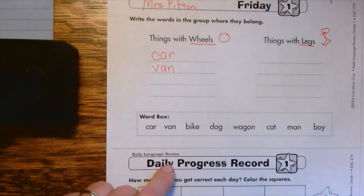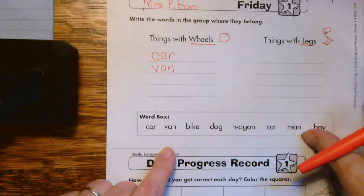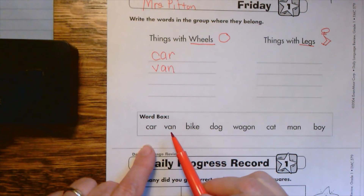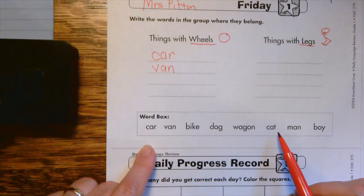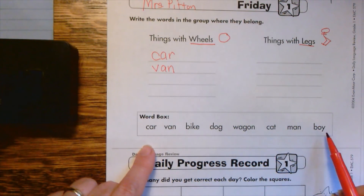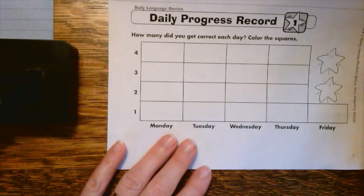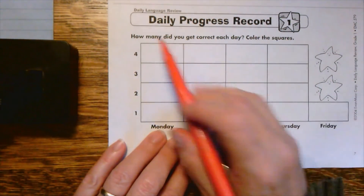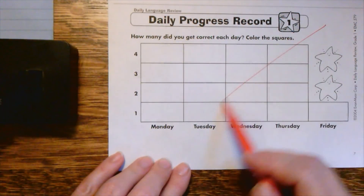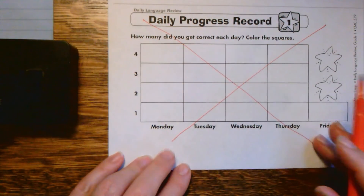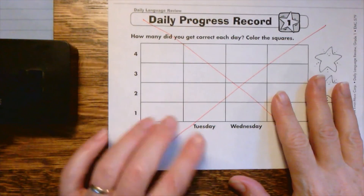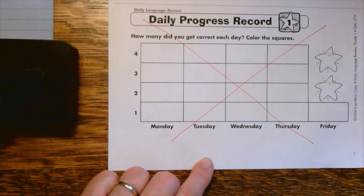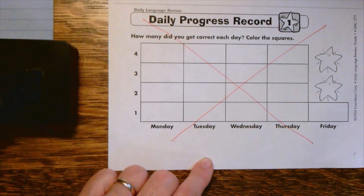Pause the video if you need to, or go back to work through them. I'll read them one more time: car, van, bike, dog, wagon, cat, man, and boy. Last of all, this part you can just ignore because we're not going through and checking them the way we would to do this. So now first and second graders, the next thing to do is to go back and click the link to watch the video and make your Eddie Elephant picture along with it.